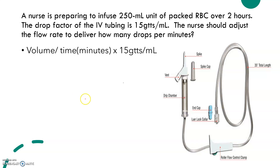So let's get right into it. The question reads: a nurse is preparing to infuse 250 ml unit of packed red blood cells over two hours. The drip factor of the IV tubing is 15 gTTS, which is drops per ml. The nurse should adjust the flow rate to deliver how many drops per minute.